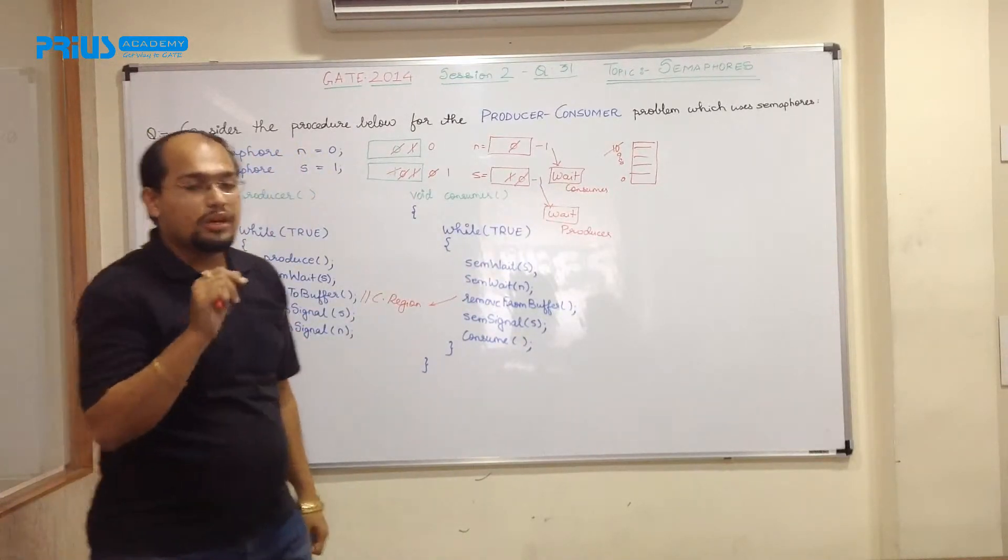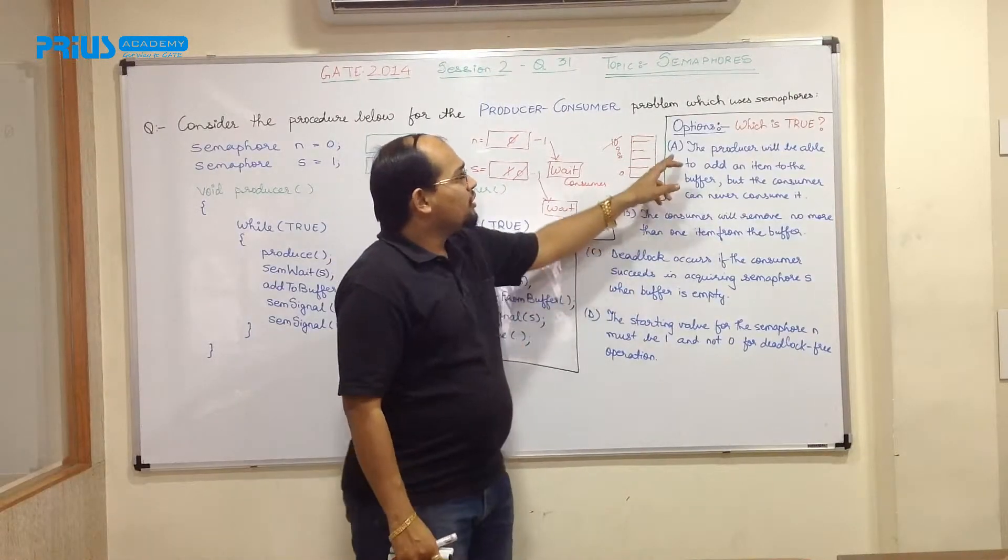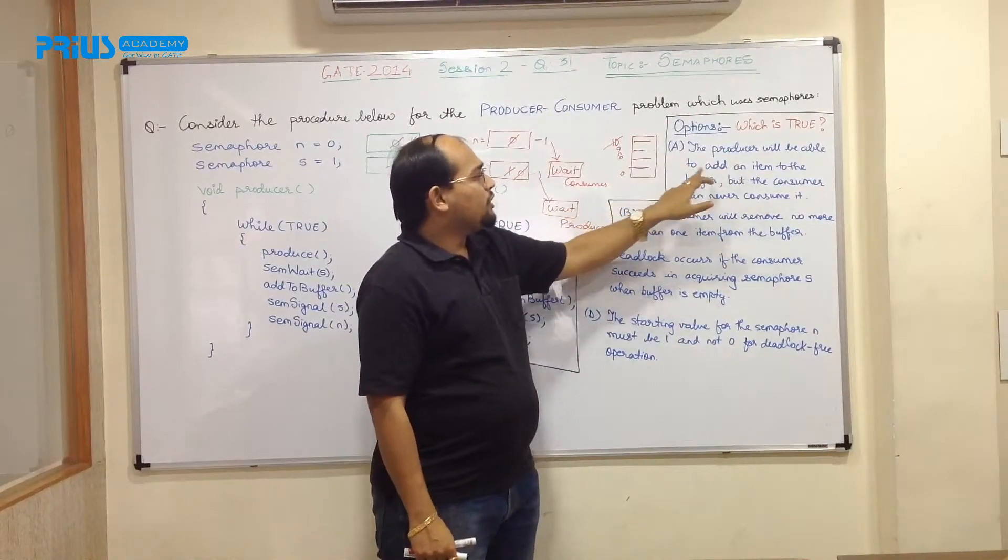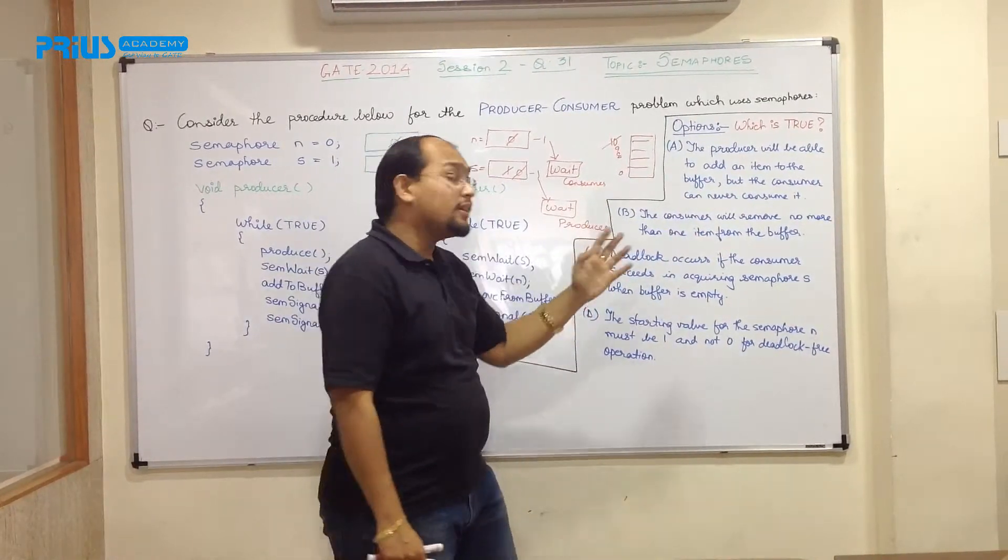Now what are the situations? Now your question was, which of the following is true? So the options are, option A, the producer will be able to add an item to the buffer, but consumer can never consume it. Let us see whether it is true or false.